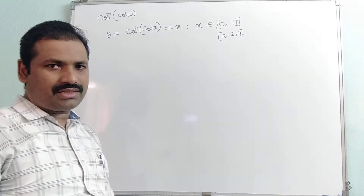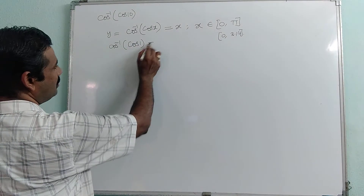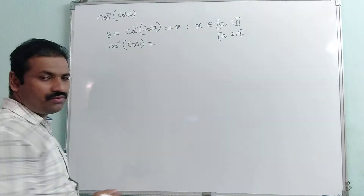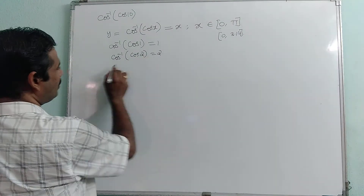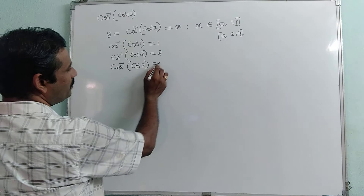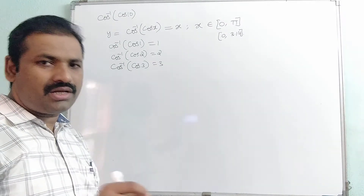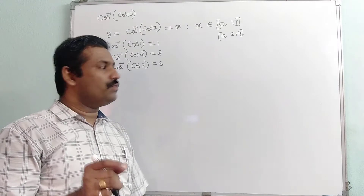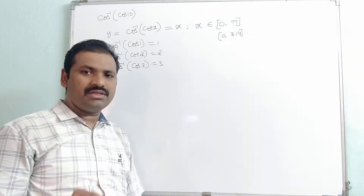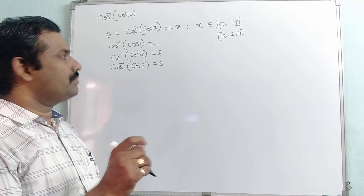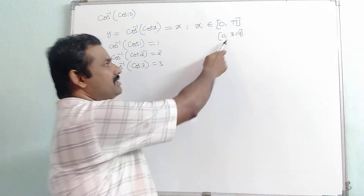In this interval, cos inverse of cos x is equal to x. So cos inverse of cos 1 equals 1, cos inverse of cos 2 equals 2, and cos inverse of cos 3 equals 3, because 1, 2, and 3 all belong to the interval 0 to 3.14, which is the principal domain. The principal domain is the interval in which the cos function is bijective — both one-one and onto. Now, 10 does not lie in this interval, so cos inverse of cos 10 is not simply 10.